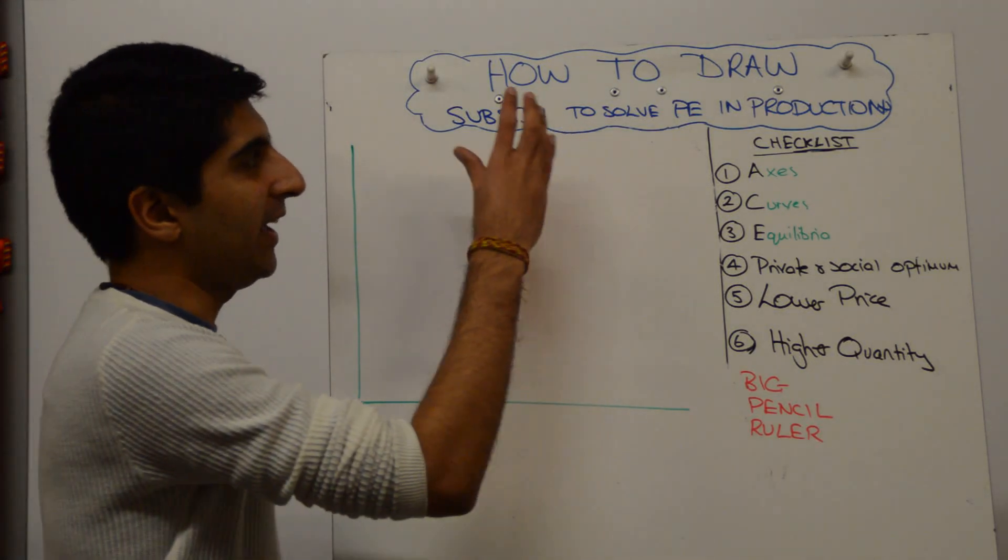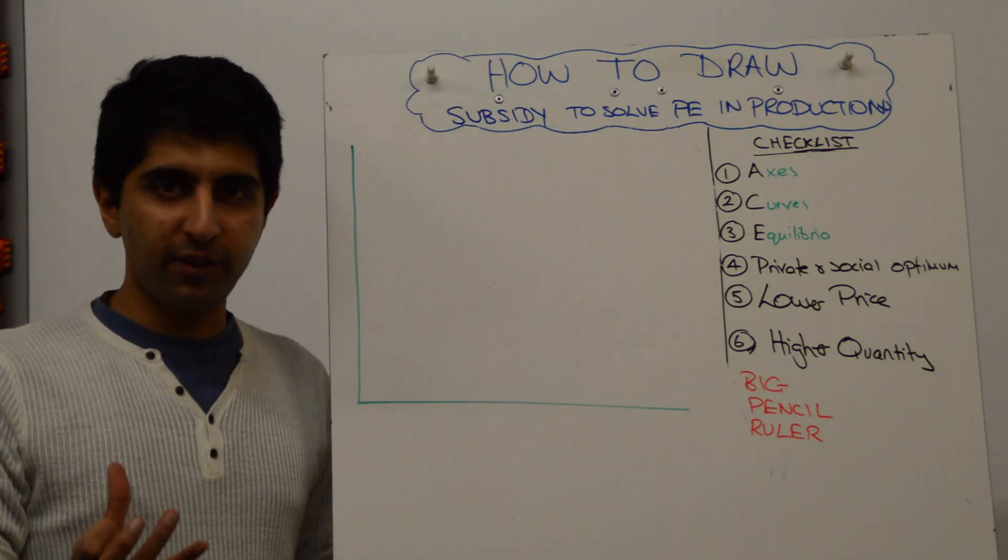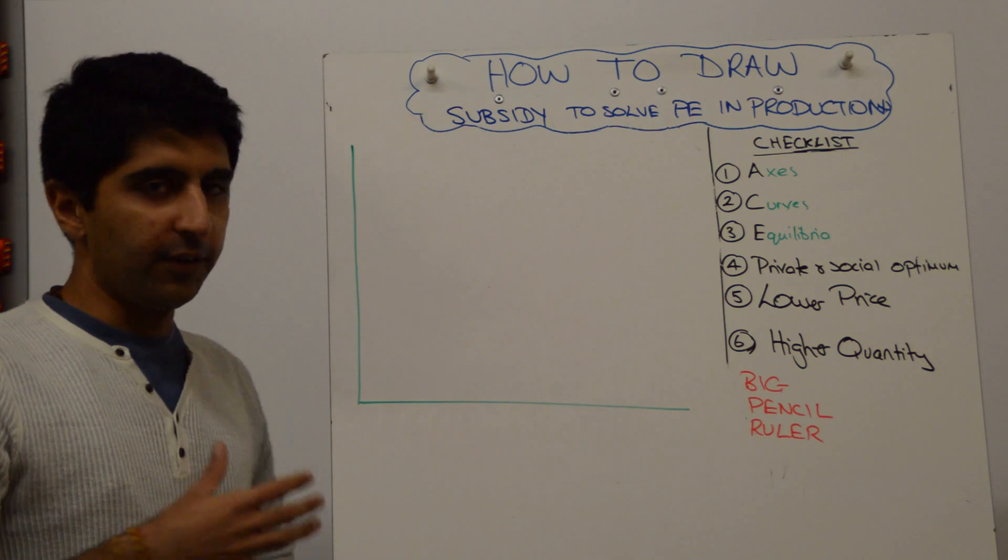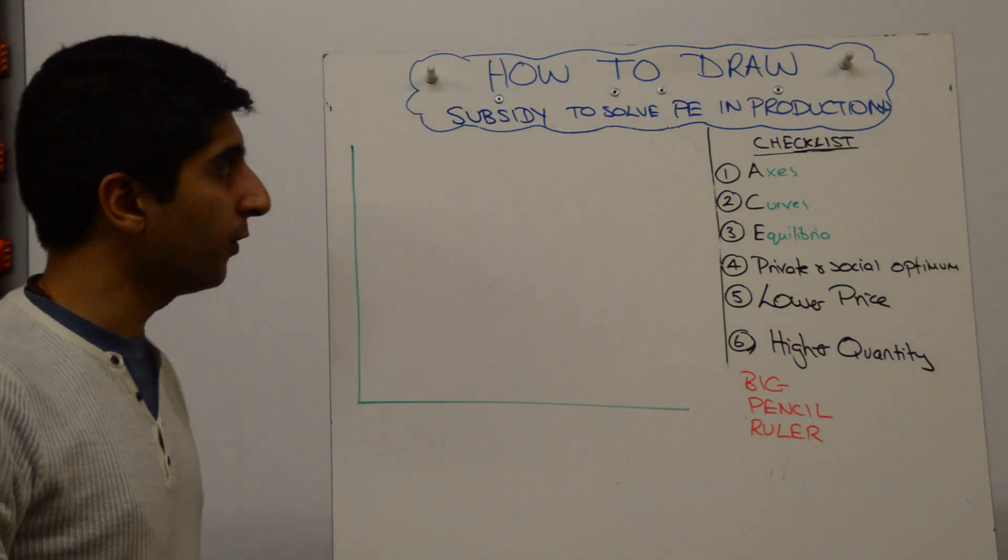Hi everybody! We've got a subsidy to solve positive externality in production. If this question came up, how would you draw the diagram to show the subsidy?